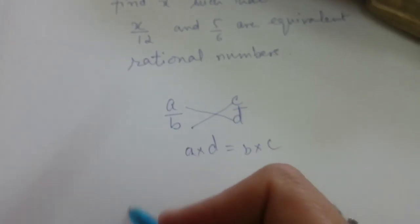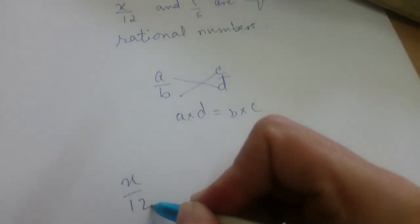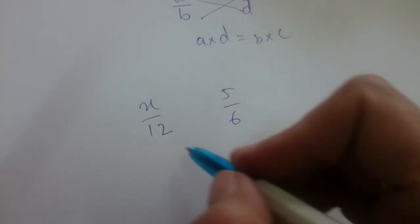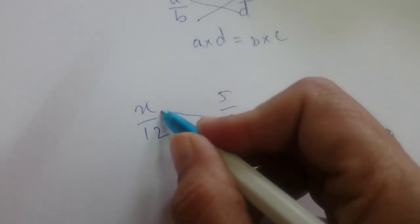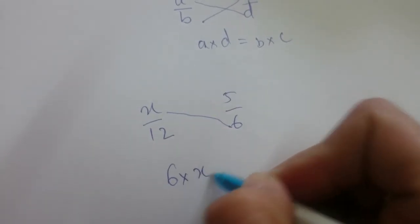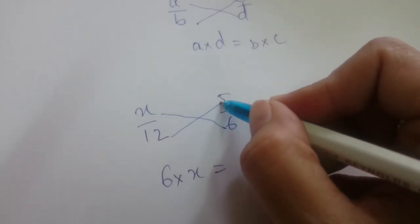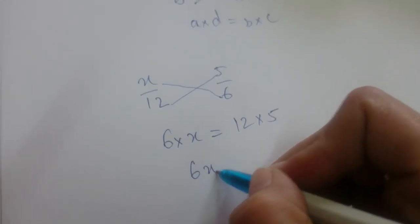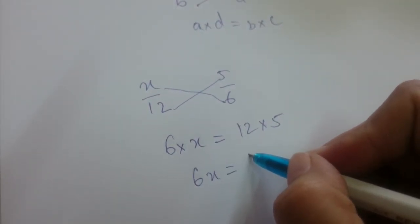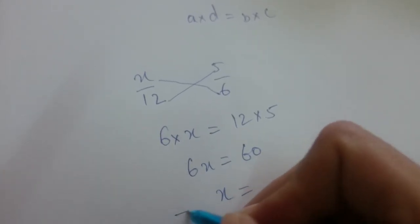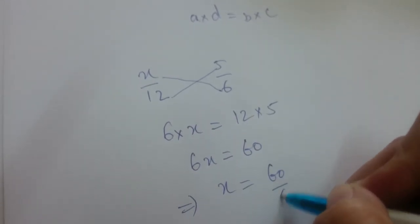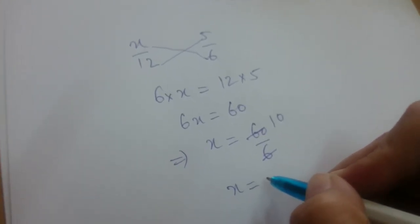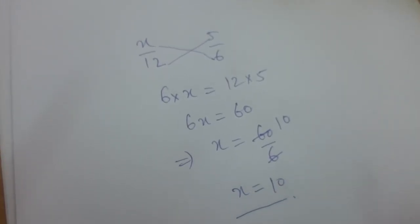Now apply the same here. x/12 and 5/6 are equivalent rational numbers, which means 6×x equals 12×5. This implies 6x equals 60. Therefore, x equals 60/6. Cancel it. So x equals 10.